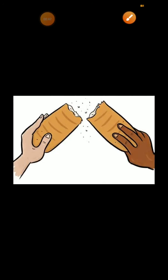Next, for example, aapke paas ek cookie hai, right? Aap two friends ho, to aap kya karoge — us cookie ke two pieces kar doge, aur divide karoge aapas mein. Ek piece aap loge, aur ek piece aap apne friend ko doge.